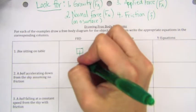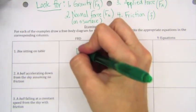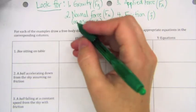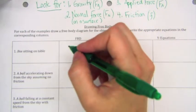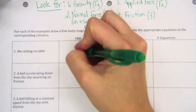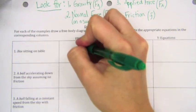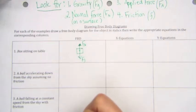FG always goes straight down. Okay? Now, the next thing. Is there a normal force? Well, is it on a surface? Yes. It's on a table. FN is drawn perpendicular to the surface that the object is on. In this case, perpendicular is straight up. Are there any other forces acting on the object? Is there a push, a pull? No. Is there friction? No. It's not moving, so it can't have any friction at all.